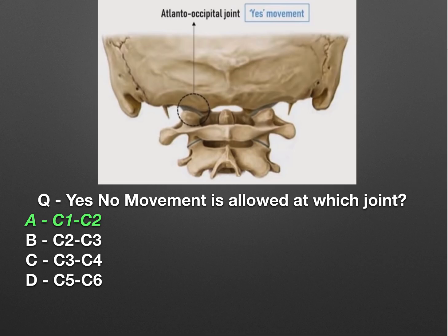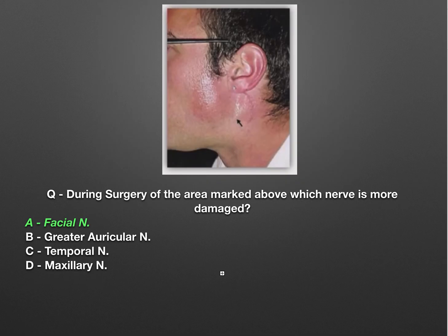This question asked at which joint no 'yes' movement is allowed. The answer is the C1-C2 joint — the atlanto-occipital joint is the 'yes' movement joint, while the image shows the first and second cervical vertebrae, which together help in yes and no movements.